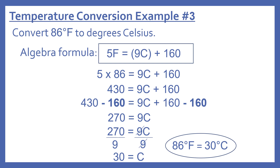Now we have to get the 9 off Celsius, so we divide by 9 on both sides. 9C divided by 9 gives us C, and 270 divided by 9 is 30. So our degrees Celsius is 30 — 86 degrees Fahrenheit equals 30 degrees Celsius.